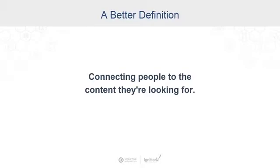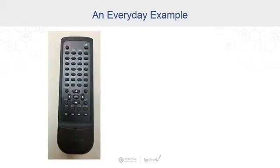Where might we see an example of this in our everyday lives? One example is that one terrible remote control for that crappy DVD player you have hiding in your house — you know the one. It doesn't work unless you stand right in front of the player, and worst of all, the buttons make no sense. Where's the play button and where's the pause? Why is there so much space given to number buttons you'll never use, and why is the most prominent button the eject button? It has every function you could ever need, but it's impossible to find what you're looking for. What this remote lacks is proper information architecture.